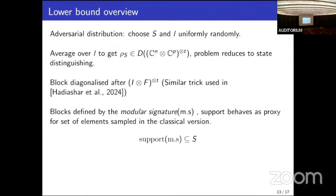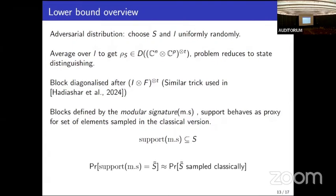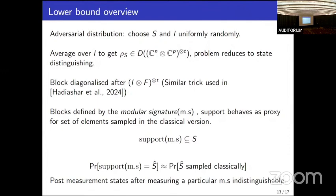For any non-zero block of rho_S, the support is always a subset of S. The probability of sampling blocks with support equal to some fixed subset is approximately equal to the probability of sampling that subset in the classical coupon collector problem. Finally, non-zero blocks corresponding to the same modular signature but across different S's are indistinguishable — so measuring the modular signature is essentially all you can do to distinguish these states.